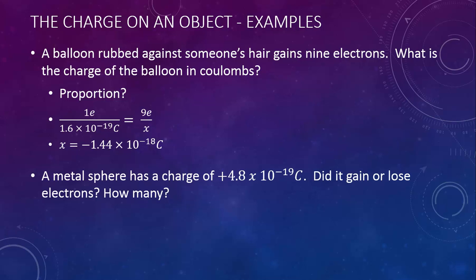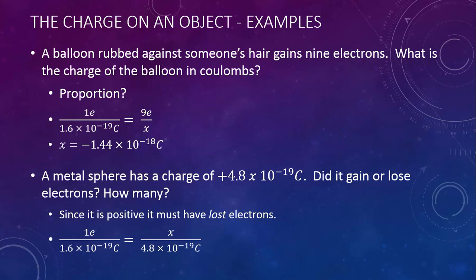Here's another example. A metal sphere has a charge of positive 4.8 times 10 to the negative 19 coulombs. Did it gain or lose electrons, and how many? Since the charge is positive, the object has more protons than electrons — the only way for that to happen is to lose electrons. Setting up a proportion: 1 elementary charge is 1.6 times 10 to the negative 19 coulombs, and 4.8 times 10 to the negative 19 coulombs is equivalent to 3 elementary charges — therefore, 3 electrons were lost.